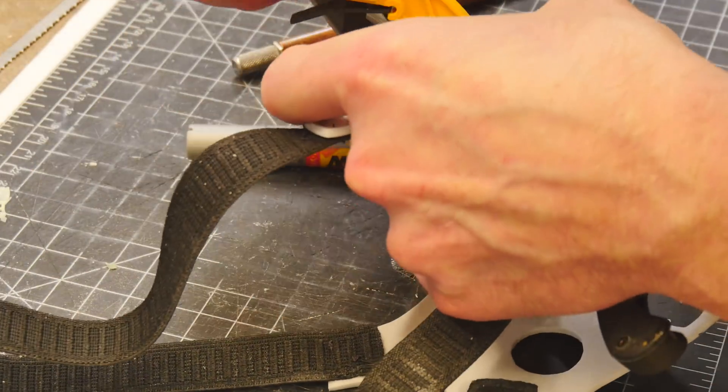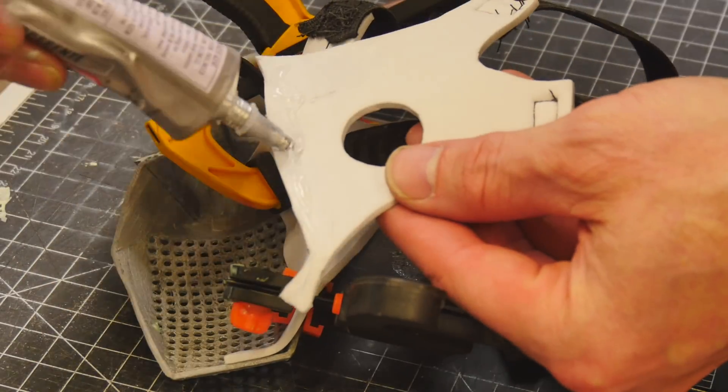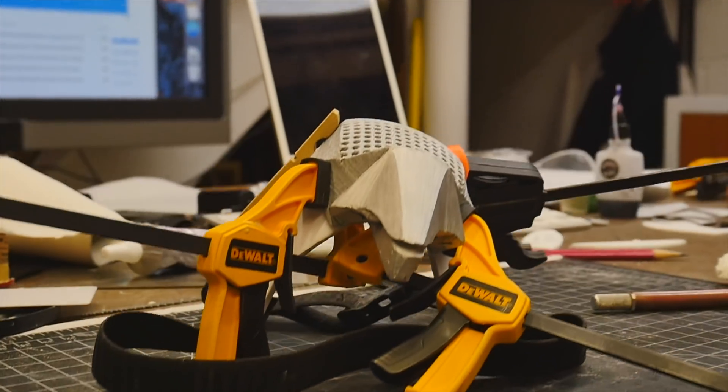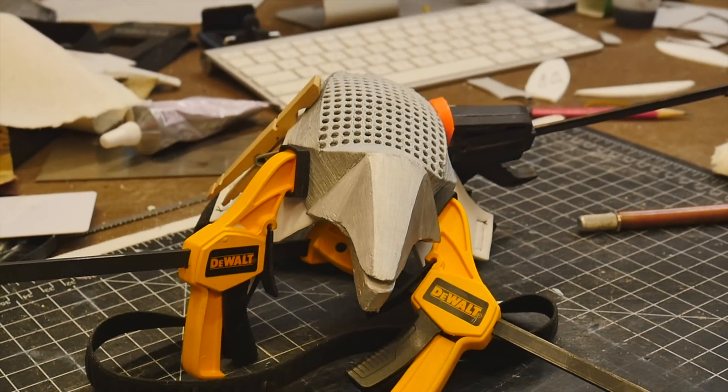I'm going to use some E6000 glue to glue the foam pieces directly onto the 3D printed part now that it's finished. You could certainly use contact cement as well. I use clamps to hold it while it dries and this works out quite well.